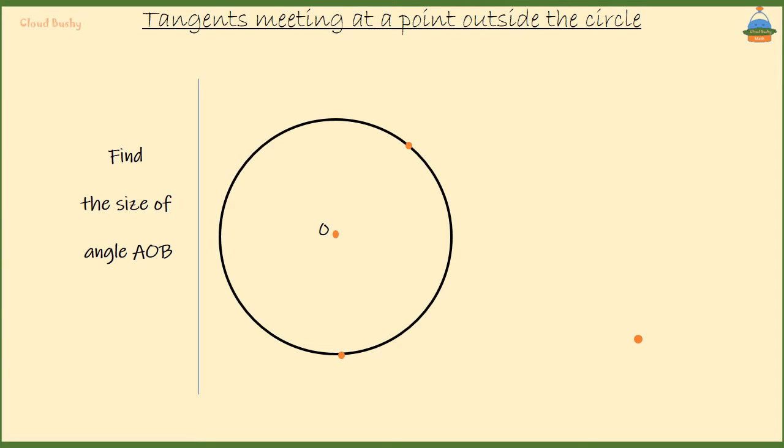All right, this one pertains to tangents meeting at a point T outside a circle. Let's call these points on the circle A and B.